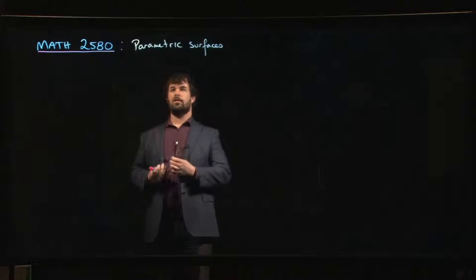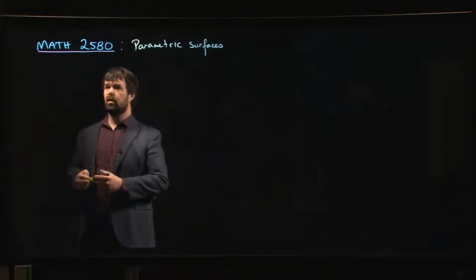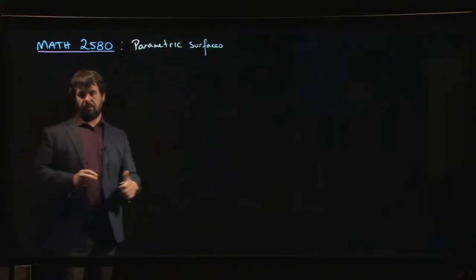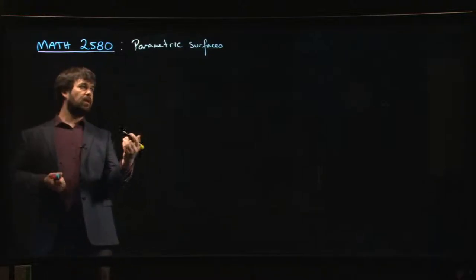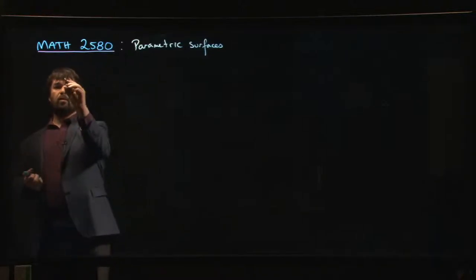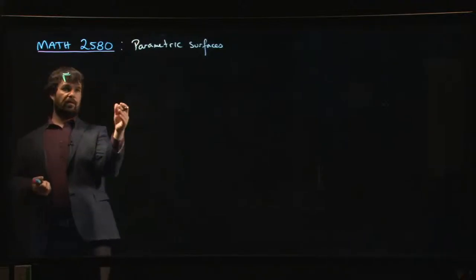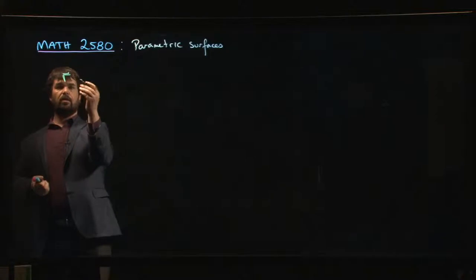In this video we're going to introduce the idea of a parametric surface. It's very similar to the idea of a parametric curve except that we want to create an object which is two dimensional. So rather than starting with r as a function of t to generate a curve, r is going to be a function from some domain D in R² and it's going to take values in R³.